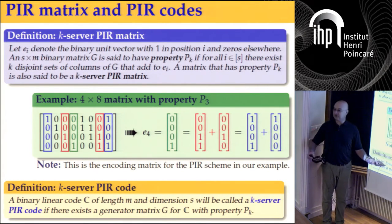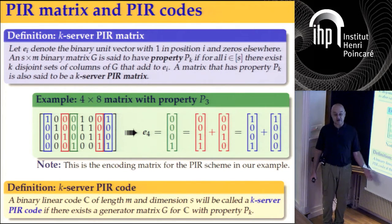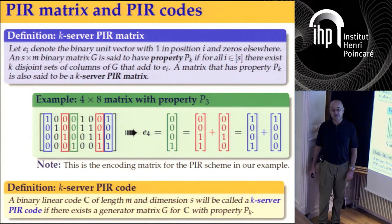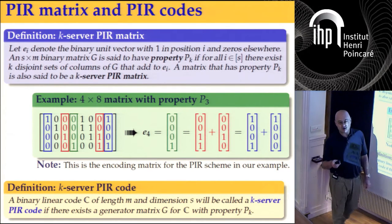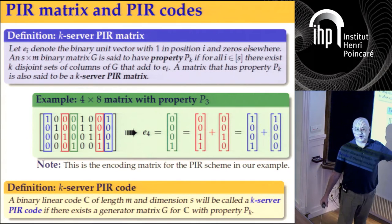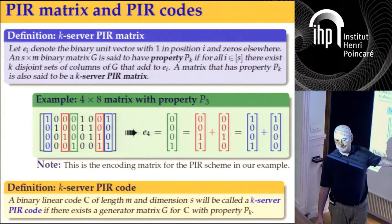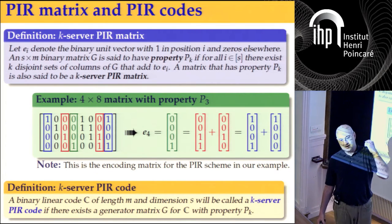We could talk about matrices or we could talk about codes. We'll say that a code is a K-server PIR code if there exists a generator matrix for it with property P sub K. This is similar to but weaker than the notion of batch codes: for batch codes, you want any multi-set; here the multi-set is just one element repeated K times.